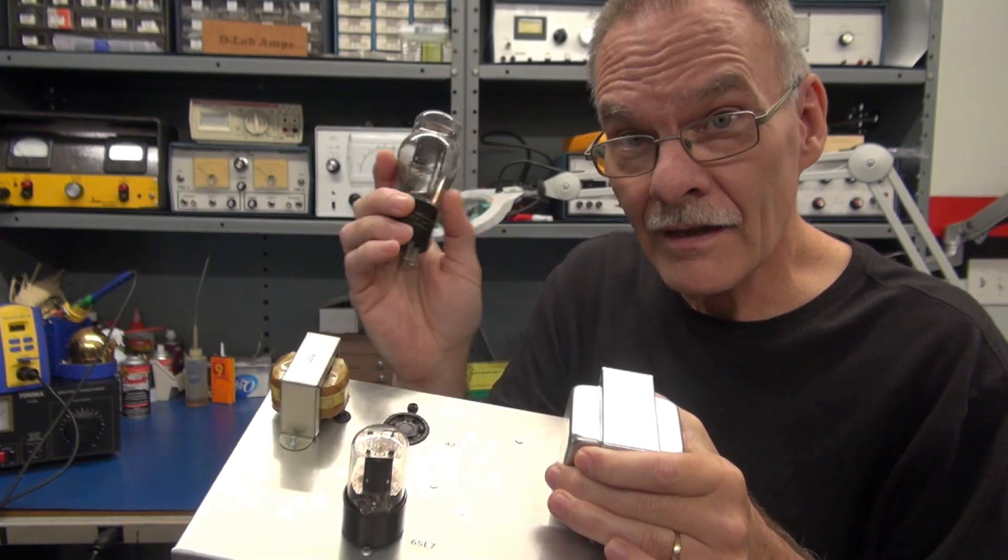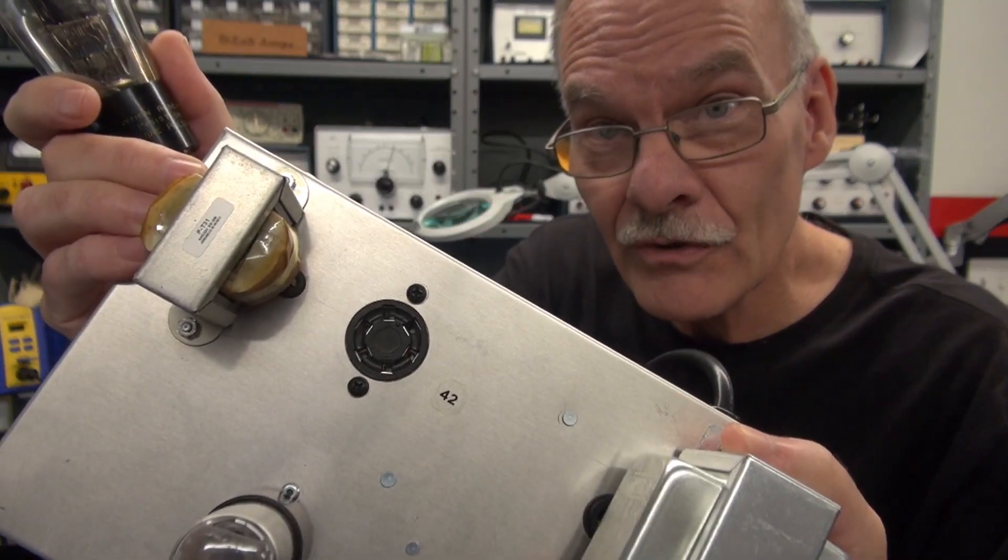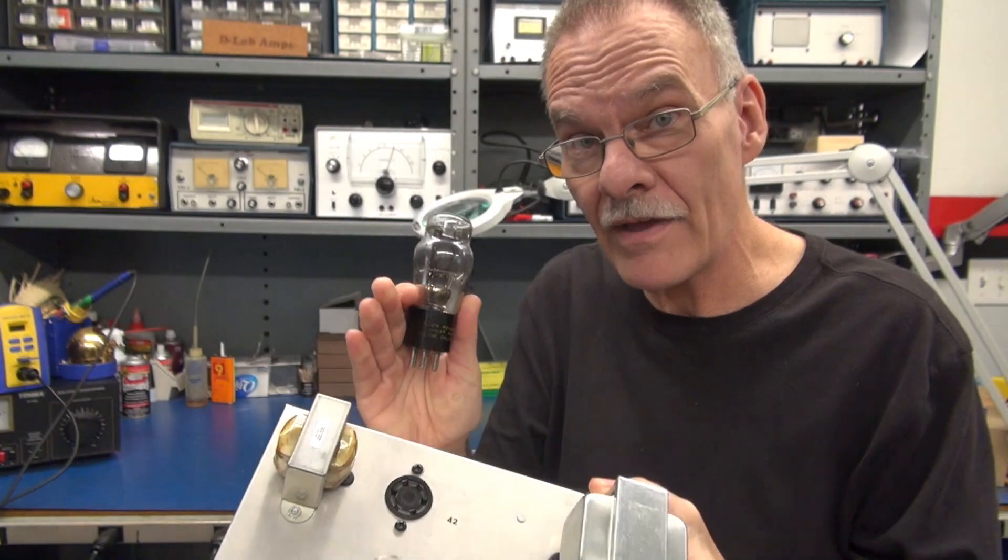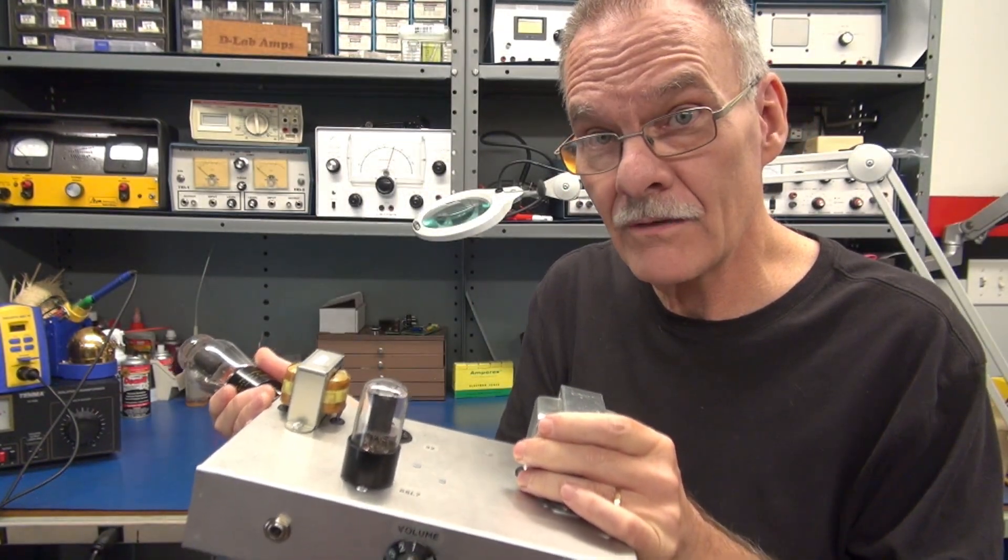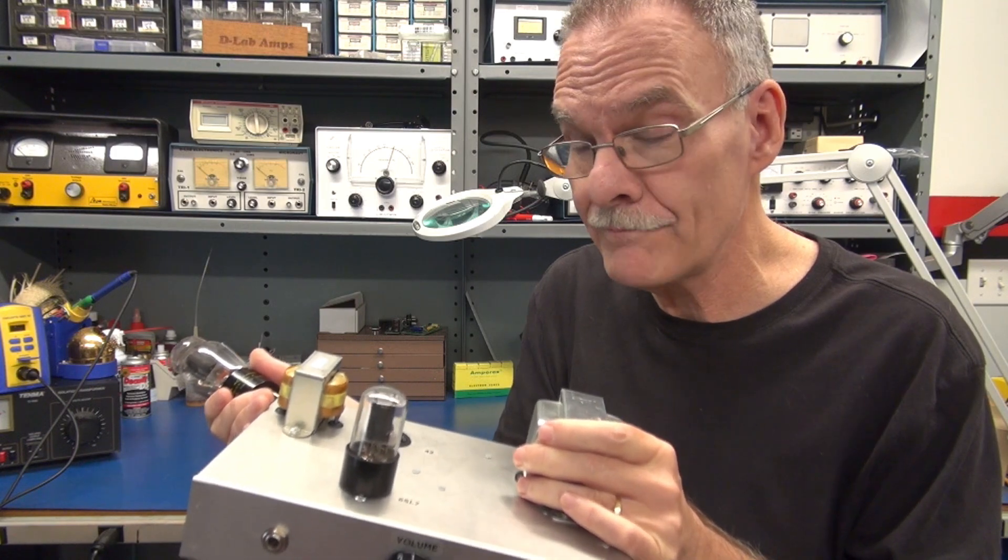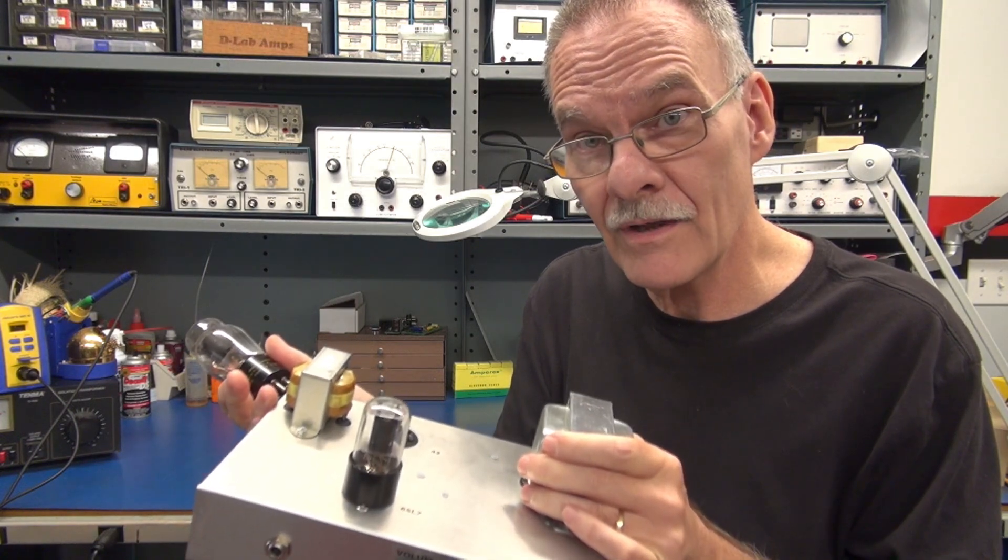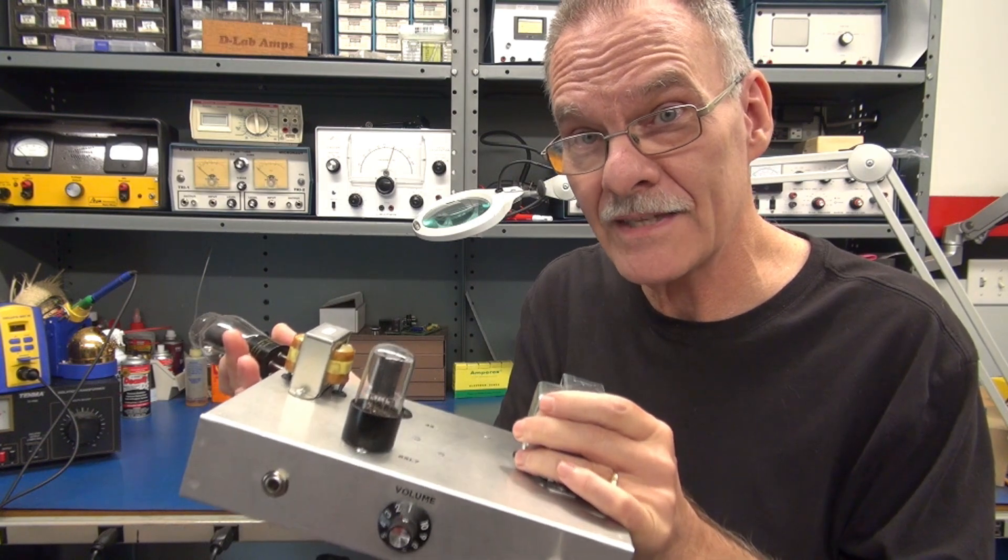Take a look at the socket that the 42 goes into. It's quite unique but available online. So this amplifier puts out approximately 4.5 watts Class A. It's point-to-point wired with no tone circuits. A very simple design.